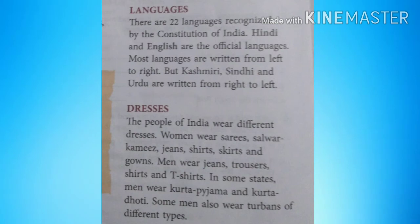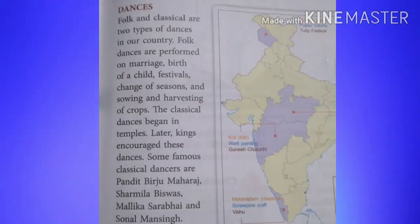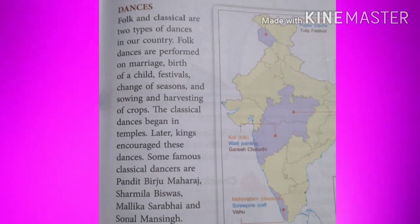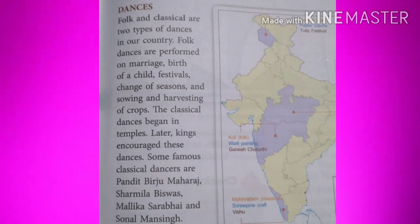Dances: Folk and classical are two types of dances in our country. Folk dances are performed on marriage, birth of a child, festivals, change of seasons, and sowing and harvesting of crops. The classical dance began in temples; later kings encouraged these dances.